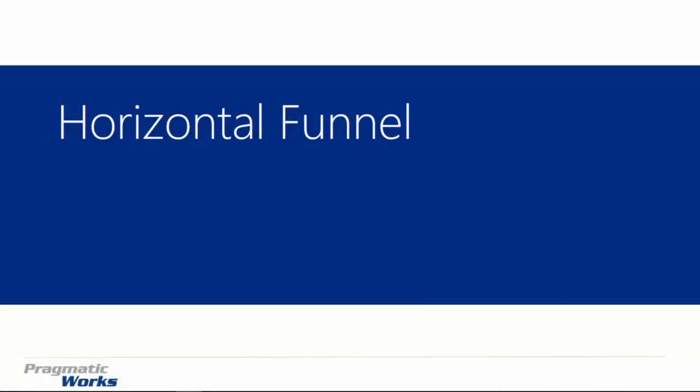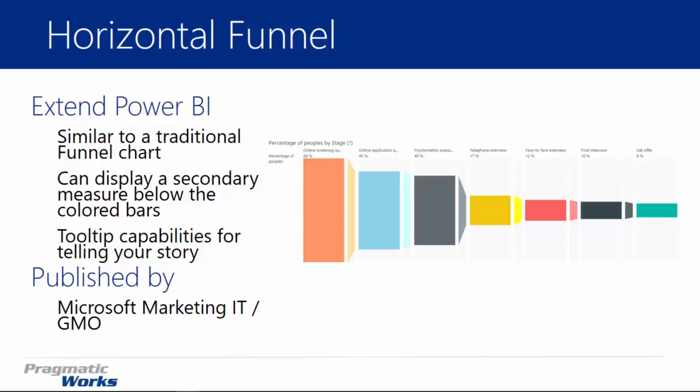Welcome back to the Power BI Custom Visuals course. In this module we're going to be covering the horizontal funnel. The horizontal funnel is another take on the traditional funnel chart but it allows you to have multiple measures displayed. In addition to the standard single measure, you have a secondary measure that allows you to display values below the colored bars. So you don't see a secondary measure shown here but what we would normally see is below the colored bars a secondary measure that allows you to visualize more information.